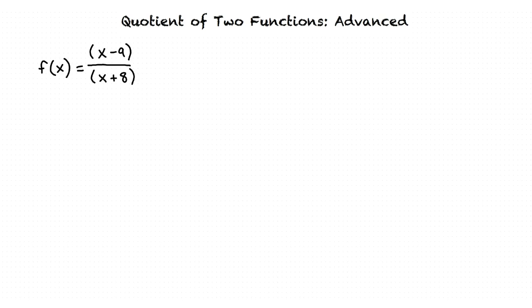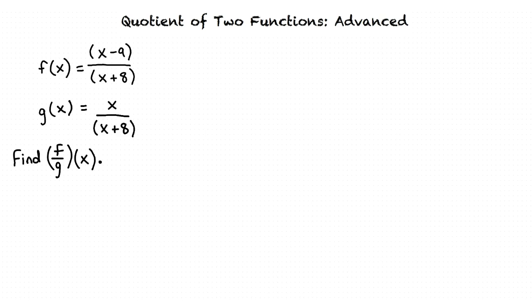This video will cover the topic: Quotient of Two Functions Advanced. Let's start out by looking at an example problem. We are given f of x equals the quantity x minus 9 divided by the quantity x plus 8, and g of x equals x divided by the quantity x plus 8. We are asked to find f divided by g in terms of x, or in other words, the quotient f divided by g.